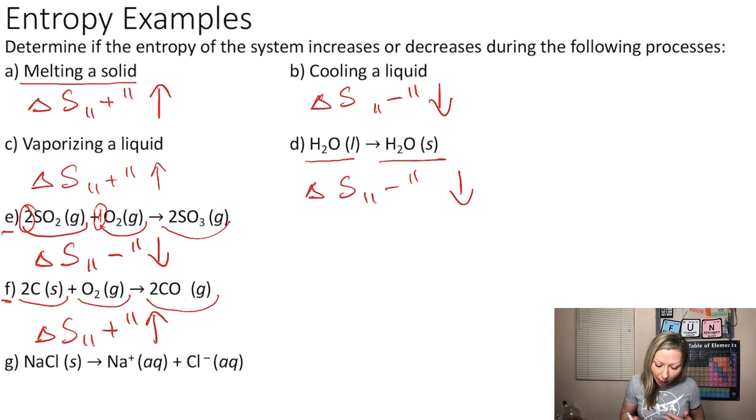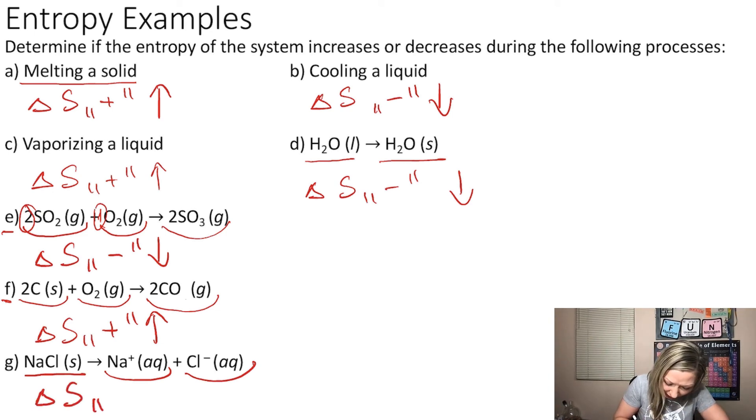And what about the last option? We have sodium chloride, which is a solid that dissolved in water creating sodium cations and chloride ions. What do you think? Will I increase the randomness? Definitely, not only I went from a solid into an aqueous solution, but I also created from ions that are stacked together, ions that can actually move around. So again, the change in entropy in this case will be positive, so it goes up.